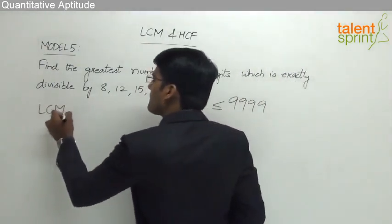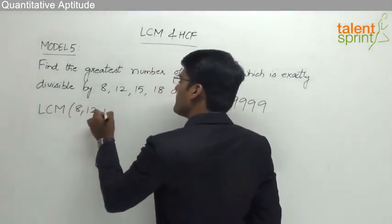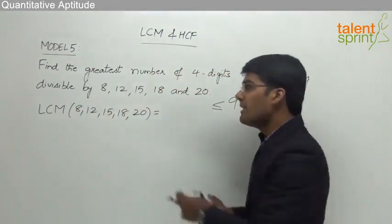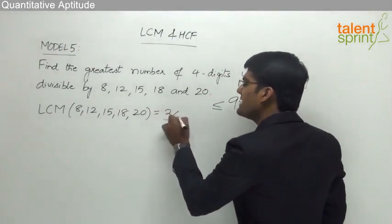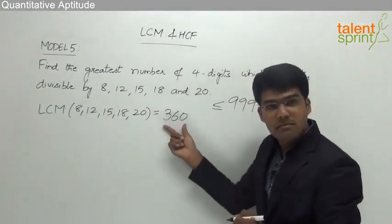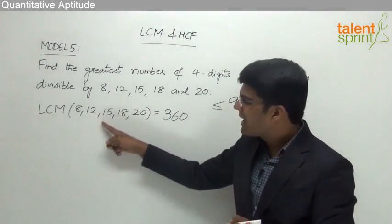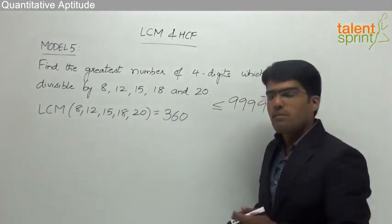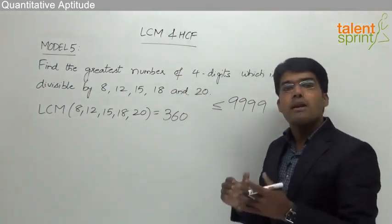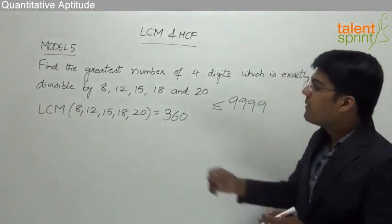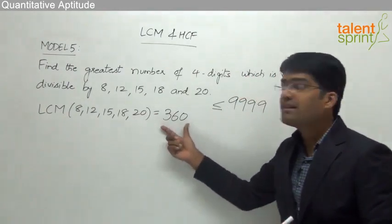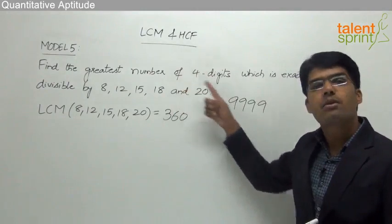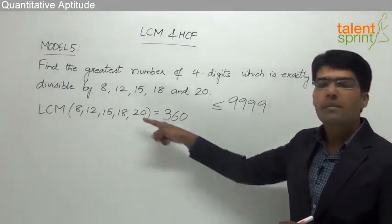So let us first find out the LCM of 8, 12, 15, 18, and 20. Following the regular procedure learned in model 1, the LCM of these values comes out to be 360. So 360 is a number exactly divisible by 8, 12, 15, 18, and 20 — it is the least common multiple. But as per the question, we need the greatest four-digit number divisible by all these values.